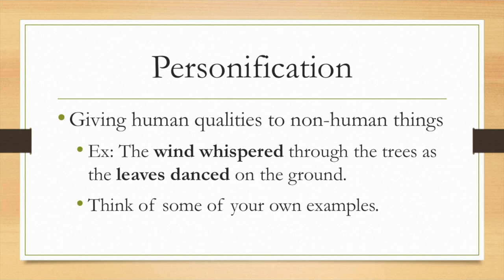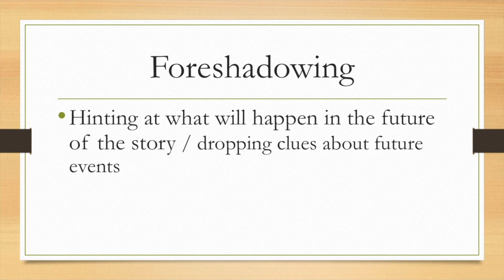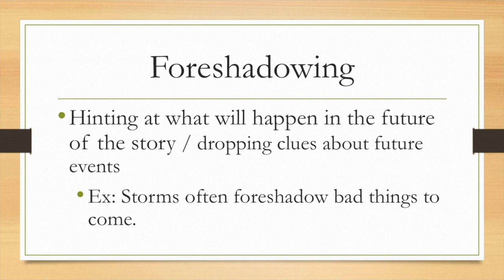Foreshadowing is our next academic word. Foreshadowing is when authors hint at what will happen in the future of the story — think of it as dropping little clues about future events. For example, if you're reading a book or watching a movie where there is a storm, oftentimes storms are used to foreshadow bad things to come.